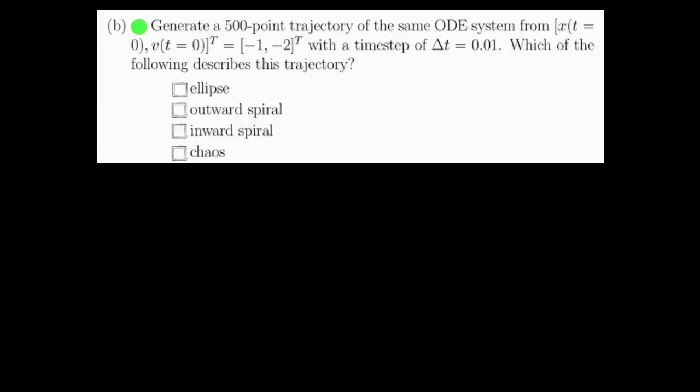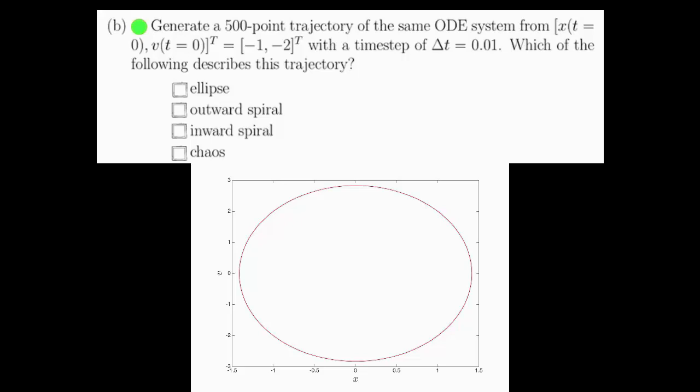For part B, we need to generate a 500-point trajectory of the same ODE system with a time step of 0.01 and see which of the following describes the trajectory best. This plot is precisely that trajectory, and as you can see, an ellipse is a good description of this.